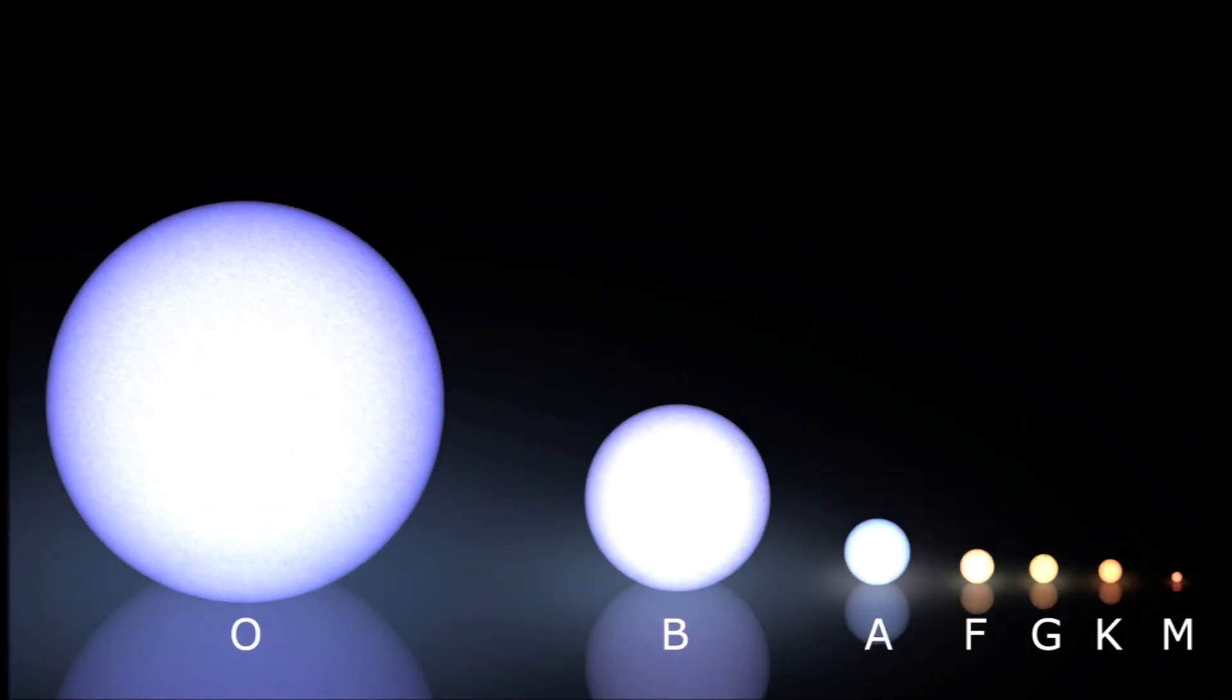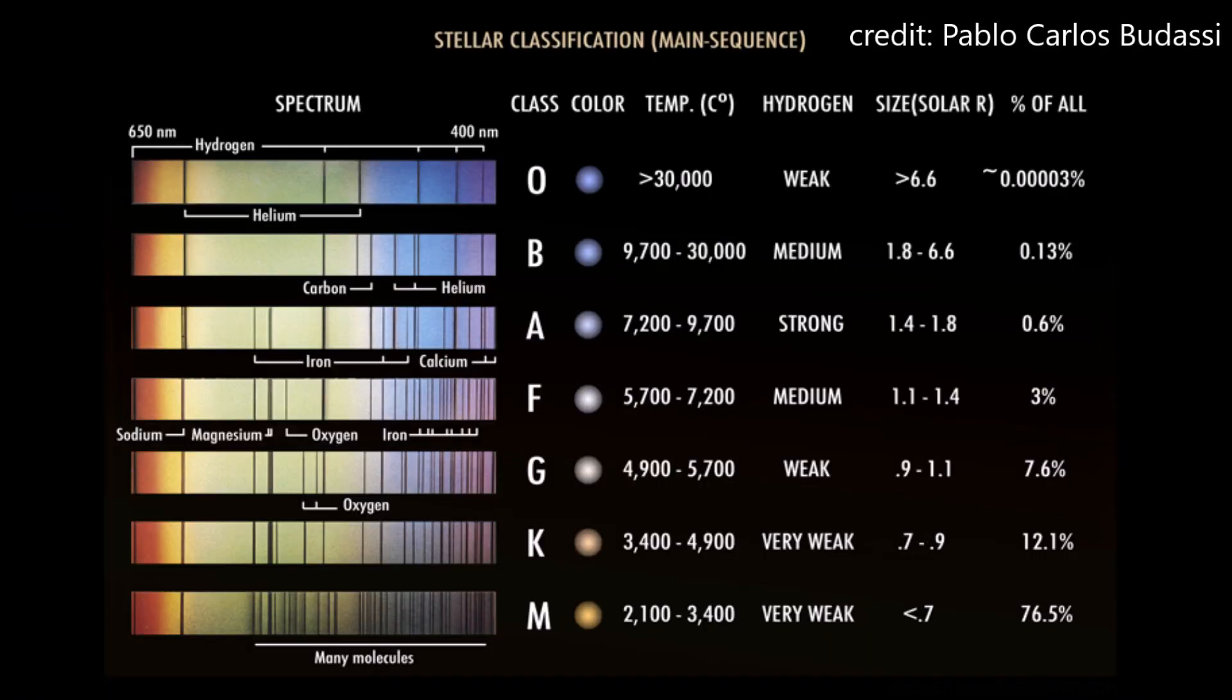Finally, M stars are the coolest and have temperatures below 3,500 Kelvin. They are red in color and are often referred to as red dwarfs.